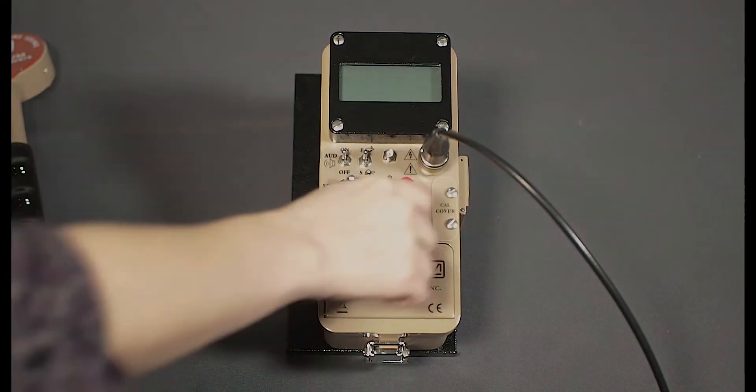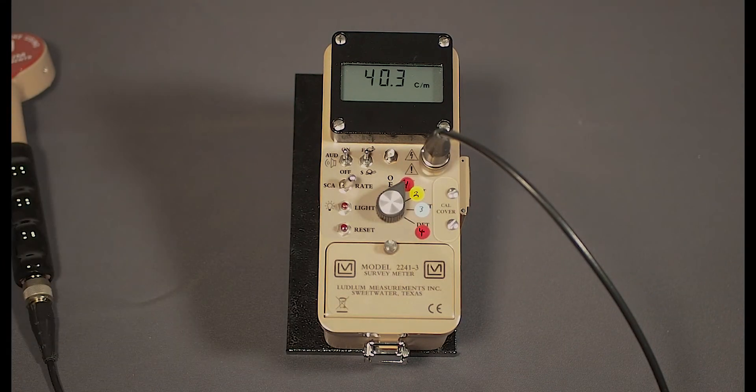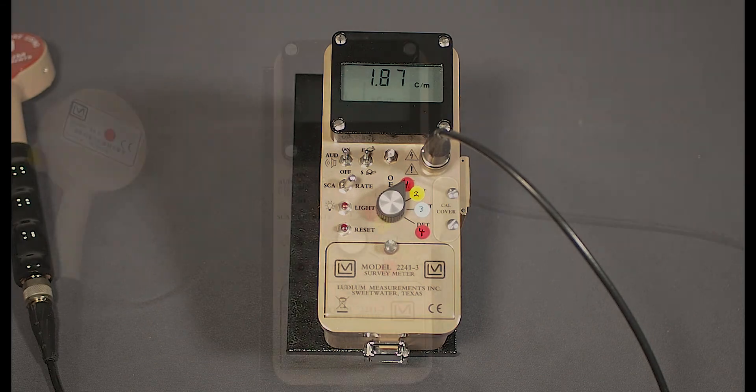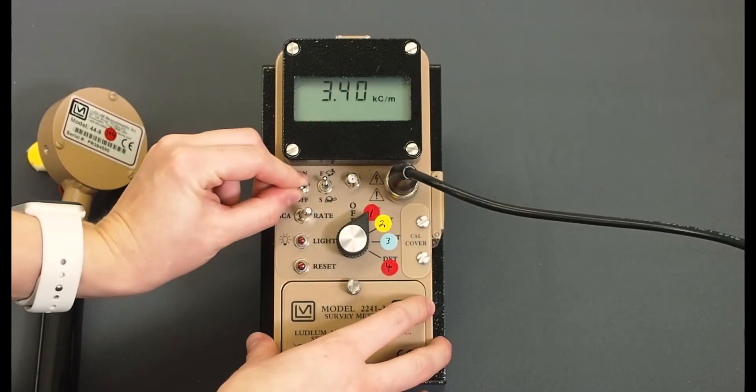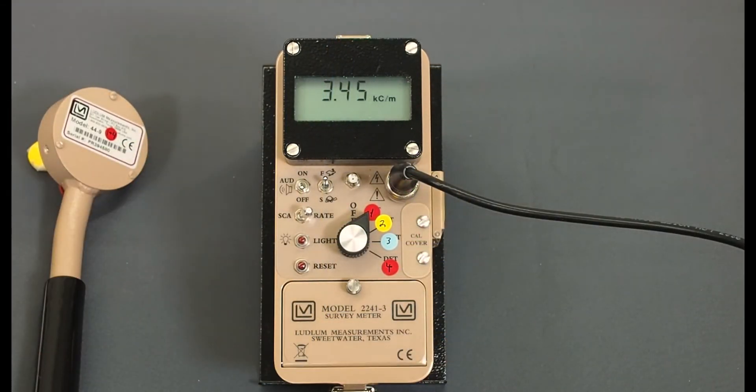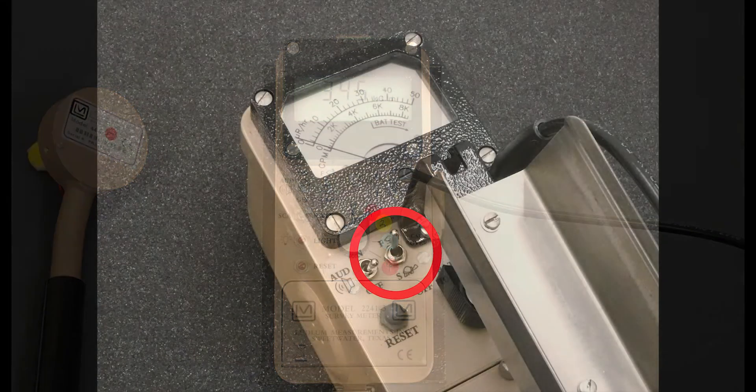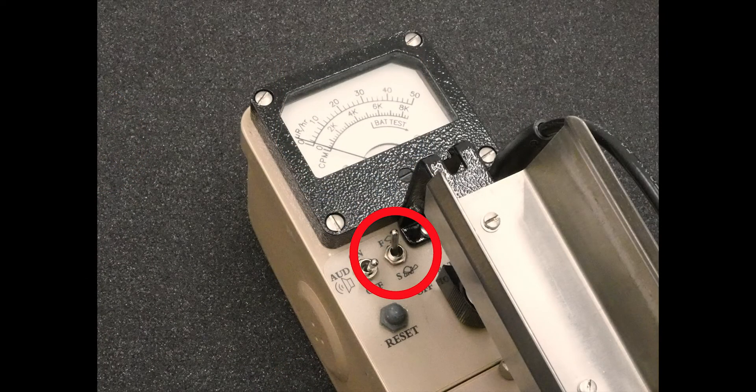The 2241-3 has a rotary switch for turning the meter on and selecting the detector setting. There is an audio switch to turn the audible clicks on and off. A switch labeled FS controls the response time of the instrument.